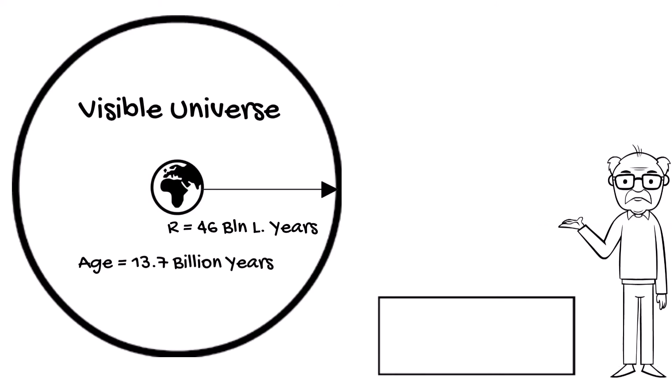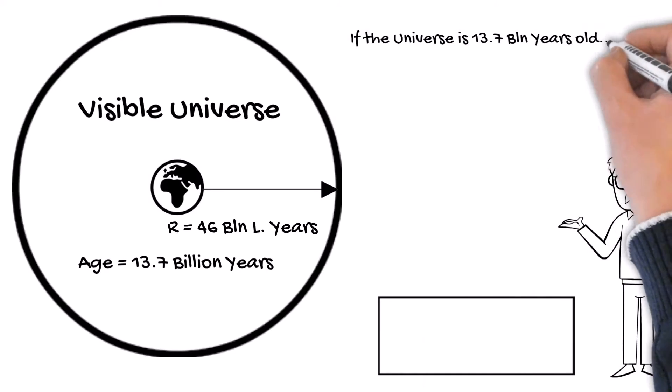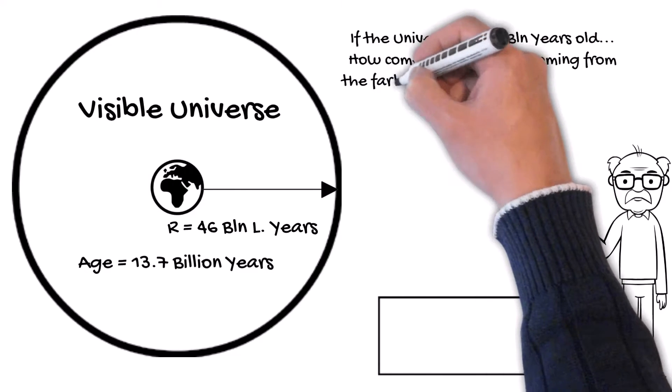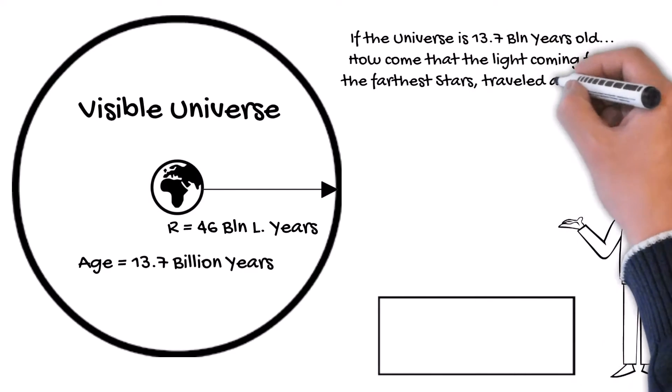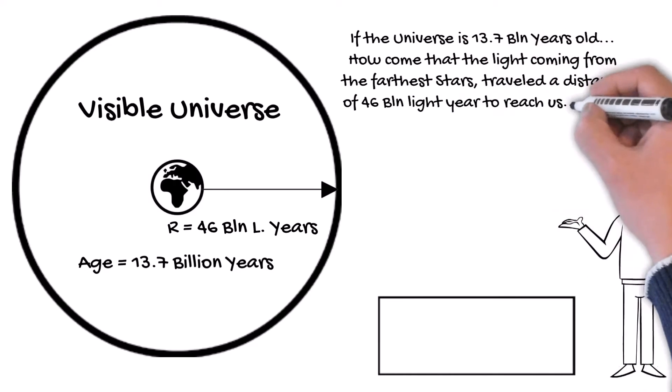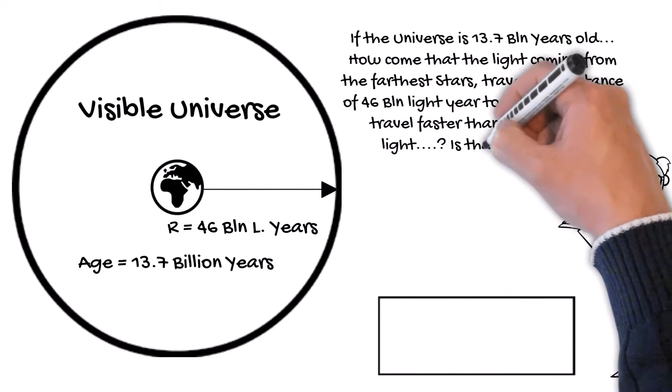And this brings us to a question. If the universe is 13.7 billion years old, how come that the light coming from the farthest stars traveled a distance of 46 billion light years to reach us? Did it travel faster than the speed of light? Is that possible?